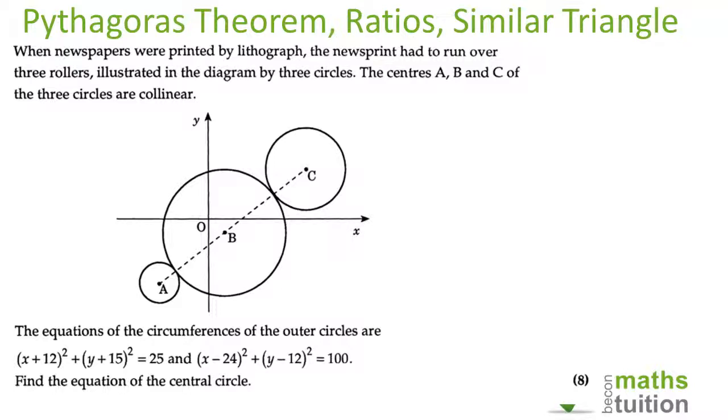Essentially we've got three circles: circle A, circle B, and circle C. Here we've got the equation for circle A. The coordinates for the center of circle A is (24, 12) with the radius of the square root of 100, radius is 10, so from there to there is 10.